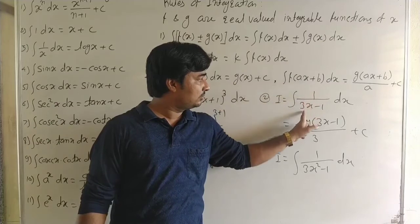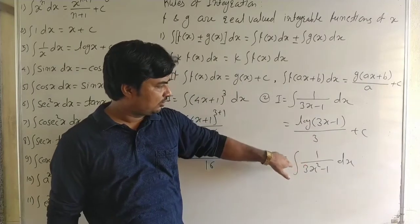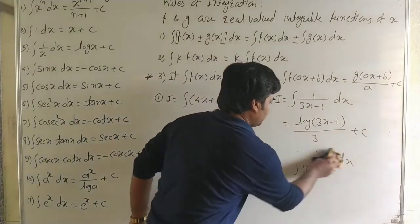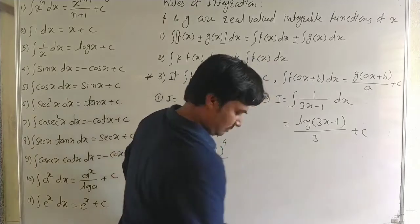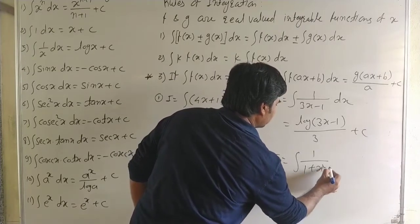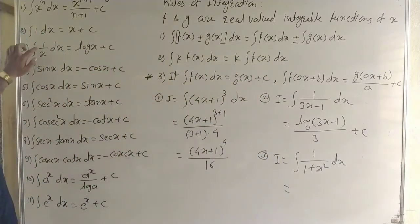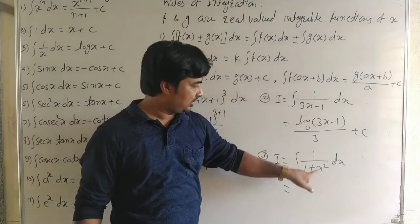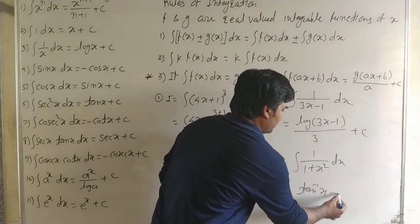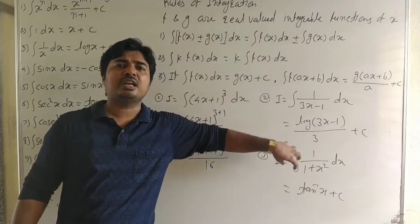We cannot use this rule for 1/(3x²) because 3x² is not in the linear form ax + b — it involves x². In such cases we use the completing the square method, which will be covered in the definite integral chapter. However, integral of 1/(1 + x²) is a standard formula: it equals tan⁻¹x + C, since the derivative of tan⁻¹x is 1/(1 + x²).